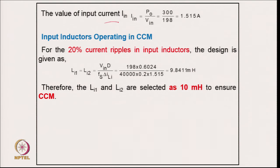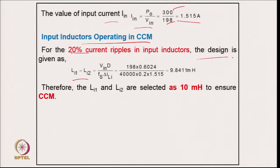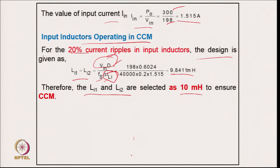The average input current is power divided by input average voltage: 300 / 198 = 1.15 A. Both input inductors are identical and operate in CCM. Considering 20 percent current ripple: during the on-period the applied voltage and duty cycle with switching frequency give a calculated value of 9.284 mH. Therefore, two input inductors are selected as 10 mH to ensure continuous conduction mode.